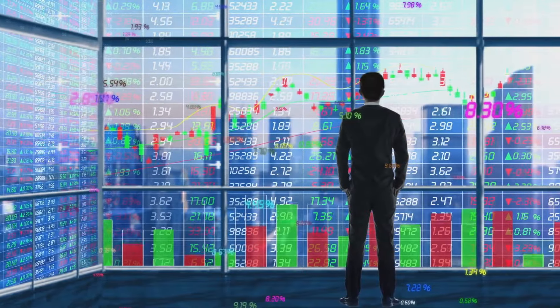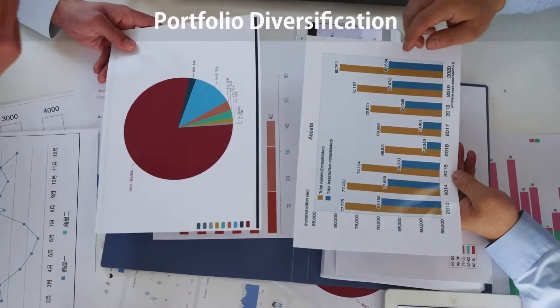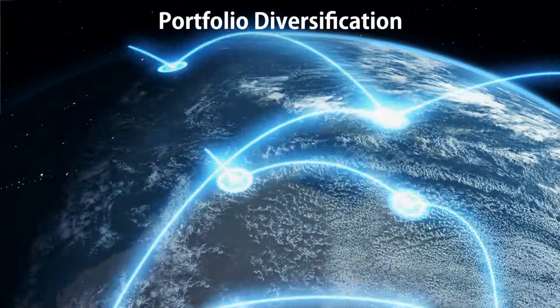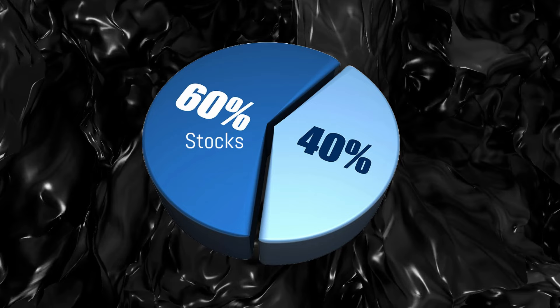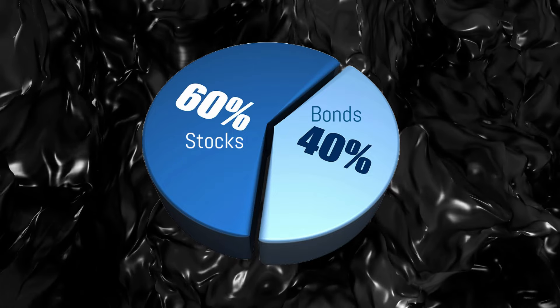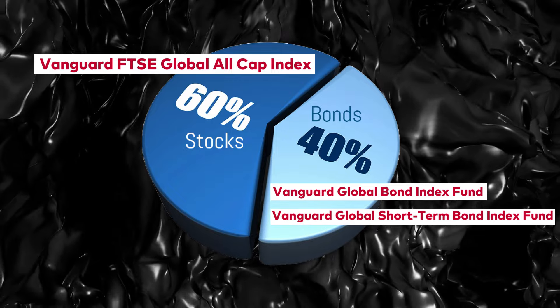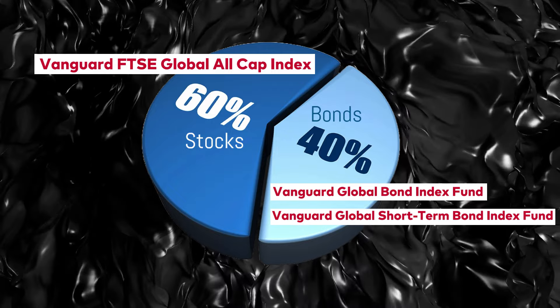To understand rebalancing, let's start with the basics of building a portfolio. A well-diversified portfolio is key to managing risk — this means spreading your investments across different geographies, sectors, and asset classes. One popular approach is the 60-40 portfolio, which allocates 60% to stocks and 40% to bonds. You can build a simple 60-40 three-fund portfolio using low-cost and diversified Vanguard index funds like Vanguard Global All-Cap, Global Bond, and Global Short-Term Bond Funds.